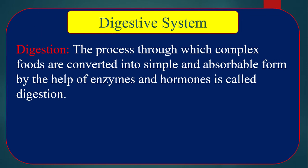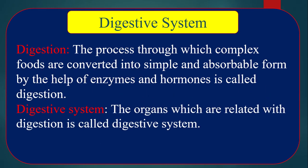To learn about the digestive system, you have to know about digestion. The process through which complex foods are converted into simple and absorbable form by the help of enzymes and hormones is called digestion. Most of the time we take complex food, which our body cannot absorb directly, so it must be broken down into simple and absorbable form.